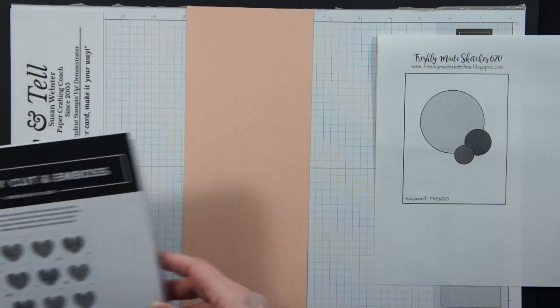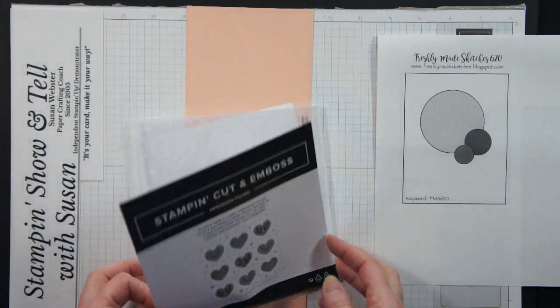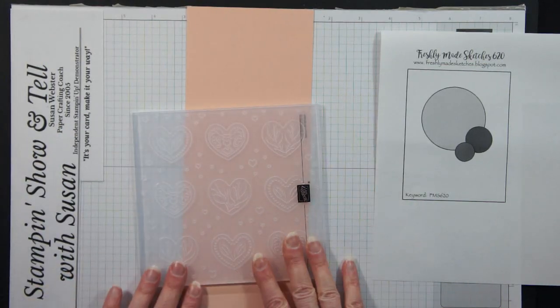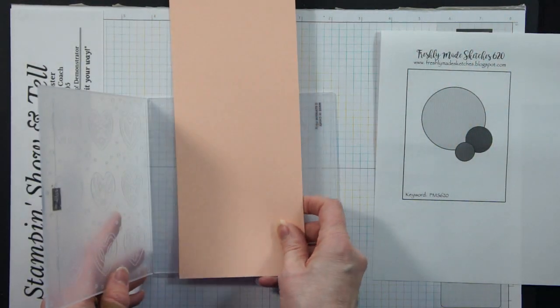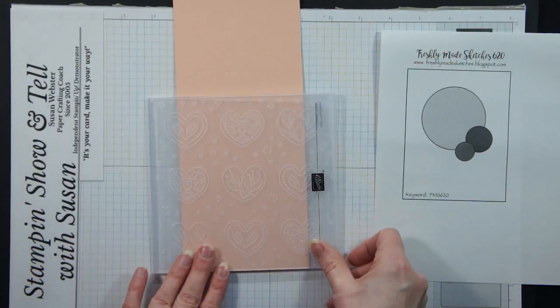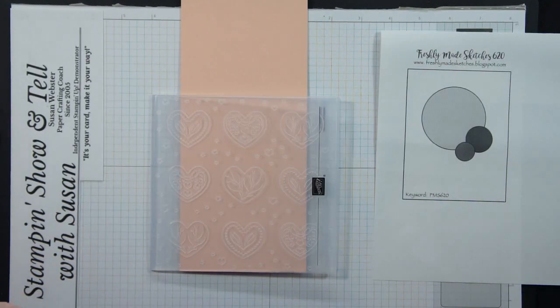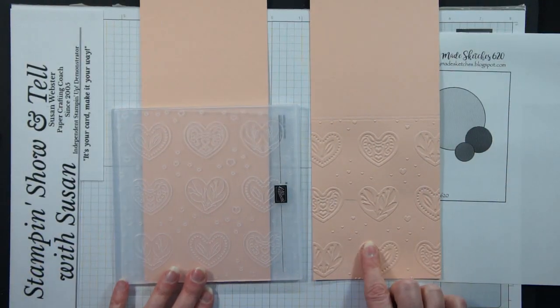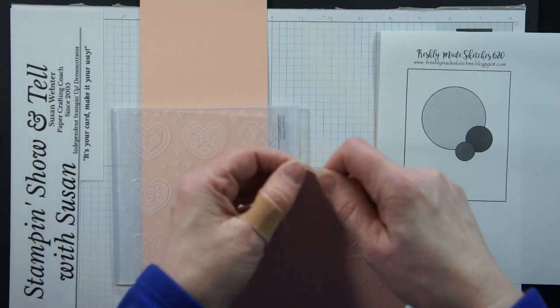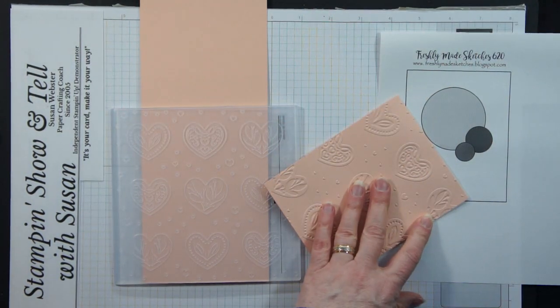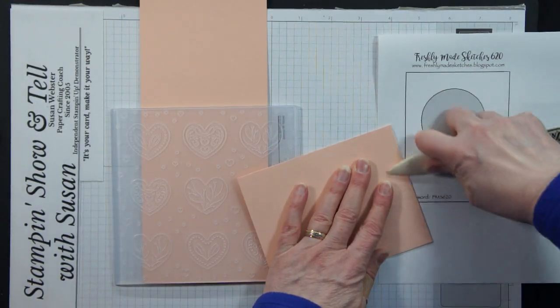First thing I did was run it through the new Adoring Hearts hybrid folder. So it's a set where you get an embossing folder and what I did was I put my piece in and I put it in the middle and I ran it through and embossed the front of my card and when I did that I came back with this embossed panel for the front of my card. So easy peasy. That works just like any other embossing folder.